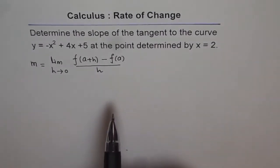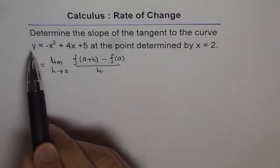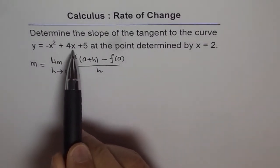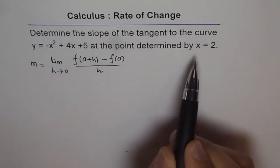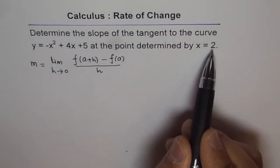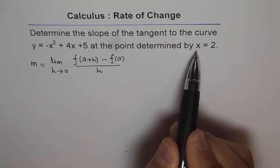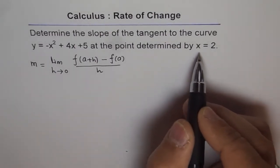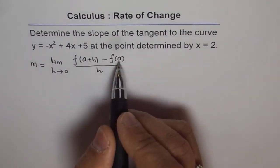In this particular equation given to us, the function is y = -x² + 4x + 5, and the point is x = 2. So a = 2 for us. Now if a is 2, what is f(2)? That is f(a).